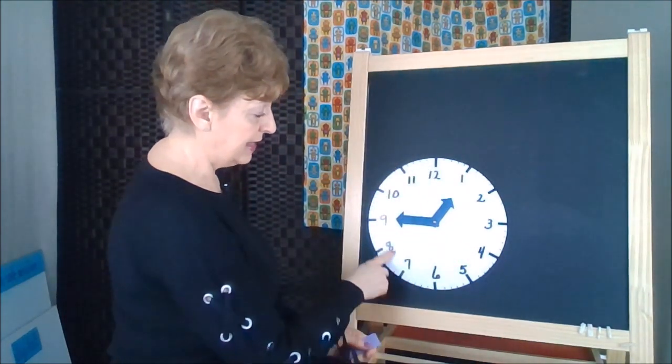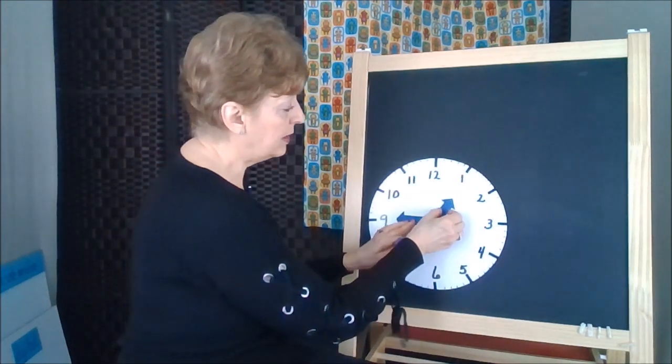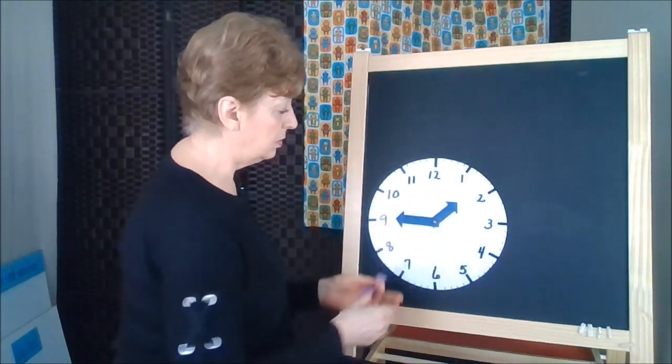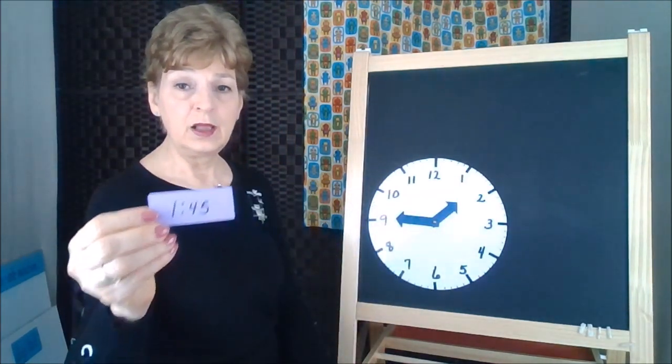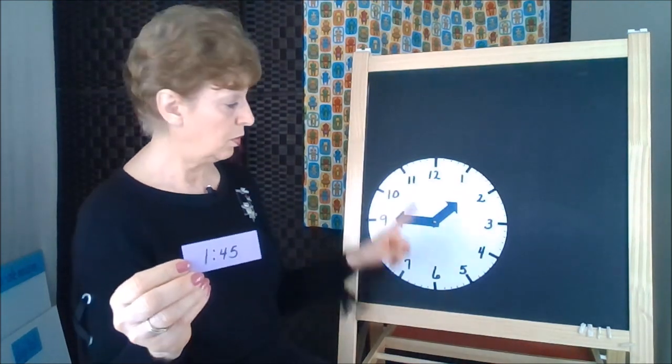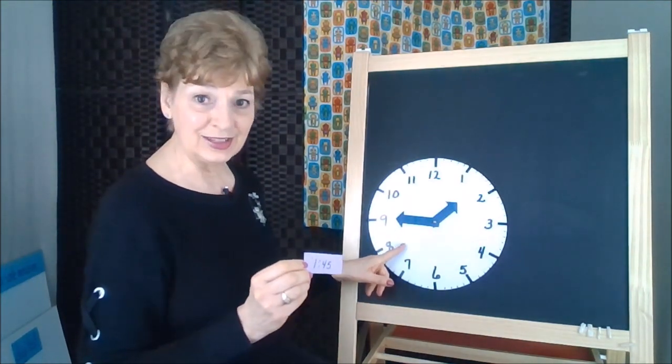It passed the halfway mark. So we're going to put our hand in between the 1 and the 2. That would be 1, 45 on the digital clock, 1, 45 on the analog clock.